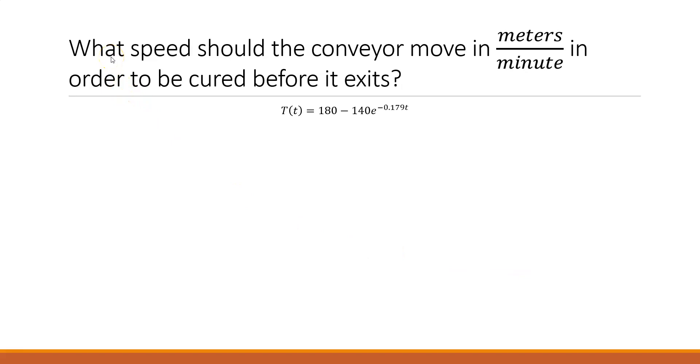So now we look at this second question. What speed should the conveyor move in meters per minute in order to be cured before it exits? So we've got a model. So we actually created a model for it. So the benefit of this model is we can figure out what temperature that panel is going to be at any point in time in that continuous curing oven. And based on how fast we want that conveyor to go, we can actually control how hot that panel is going to be when it leaves. Again, that's the benefit of this particular model. So here we have the model. Now we want to find out a speed. So we're going to have to figure out a point in time T based on a known temperature because we know what temperature that panel is going to cure. Now we just need to figure out what time it's going to be applied to it.